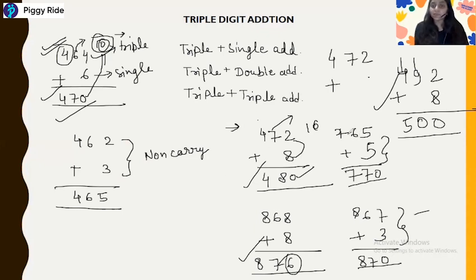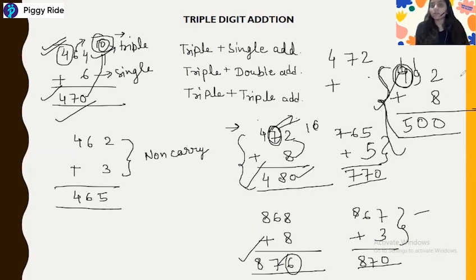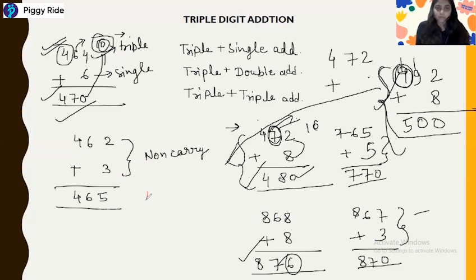In the earlier examples the carry went only to the second number — the tens place. But here you can see the carry goes also to the third number — the hundreds place — because we have a bigger number here. So the carry goes from the units place to the tens place, and then also to the hundreds place. So let's solve the same example 492 plus 8 using an easier method.